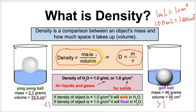So that is how density works. Density is a measure or a comparison between an object's mass and an object's volume. Now let's take a look at a few examples and learn how we can calculate the densities of several different objects.